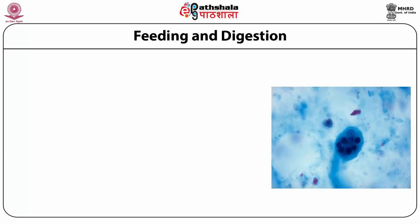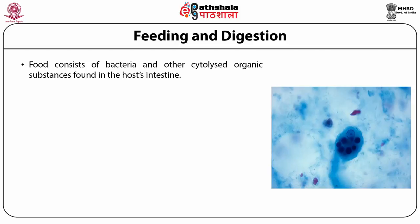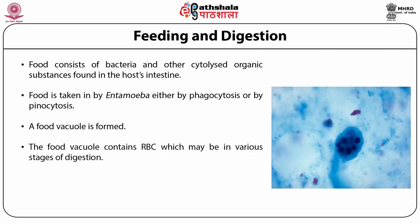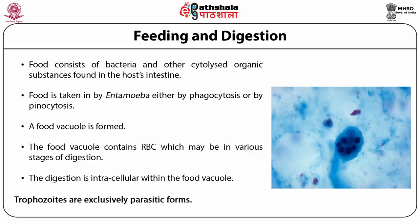The trophozoite is the feeding stage. Food consists of bacteria and other cytolized organic substances found in the host's intestine. Food is taken in by either phagocytosis or pinocytosis, forming a food vacuole. The food vacuole contains RBCs in various stages of digestion. Digestion is intracellular within the food vacuole. The trophozoites are exclusively parasitic forms.